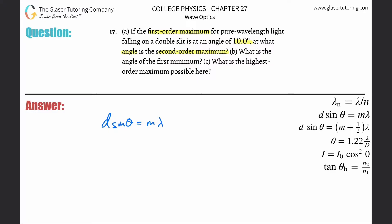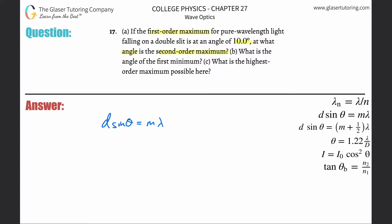We're dealing with first order and second order, so we need two equations. The distance between the slits does not change depending upon your order — it's a constant for the experiment. The angle will differ, and this would be the first order value with its corresponding wavelength. The angle for the first order is 10 degrees, which was given to us.